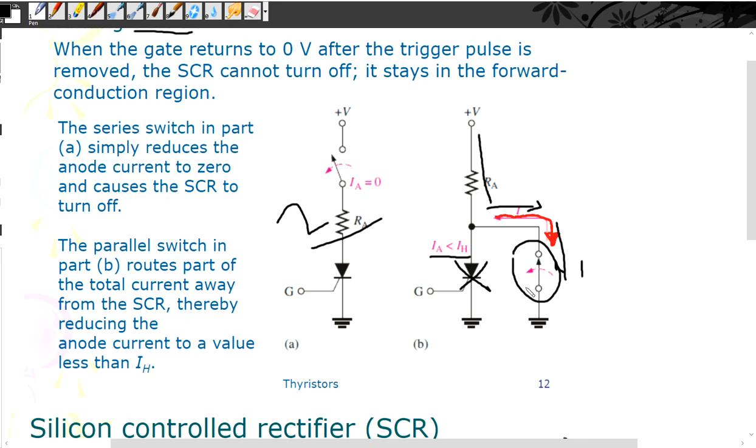And putting a switch in parallel with it will make the current flow to the switch and to ground. No current will flow here, so this will turn off as well.